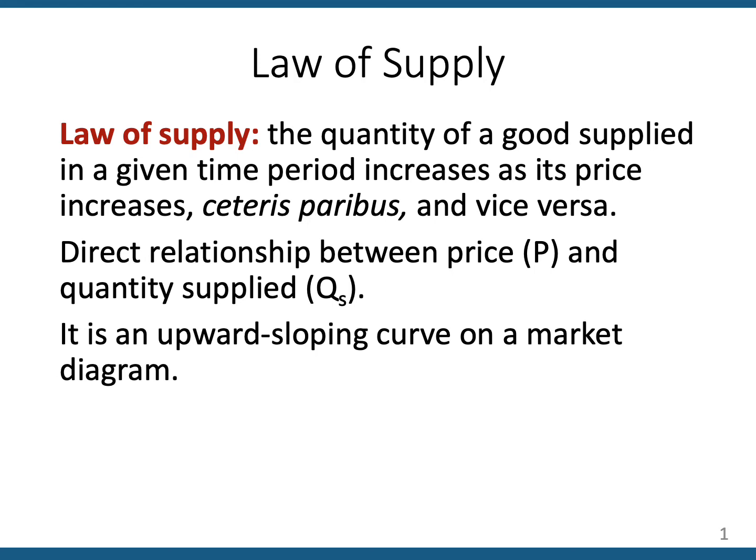The law of supply says that as the price of the product rises, the quantity supplied by all sellers in the market will also rise. As the price of the product decreases, the quantity supplied by all sellers in the market will also decrease. Other things equal — if nothing else changes but the price of the product, the price and the quantity supplied by sellers will move in the same direction.